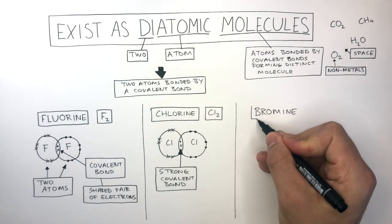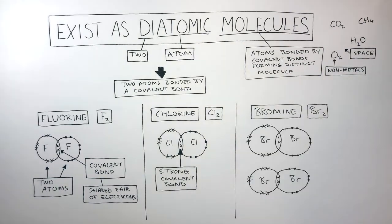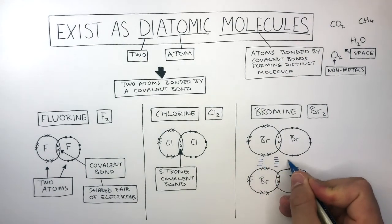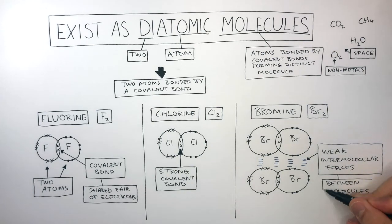Bromine is a diatomic molecule which has the molecular formula Br2. Here are two bromine molecules represented by dot and cross diagrams showing the outer electrons only. These lines represent the weak intermolecular forces which exist between the molecules and they require little energy to break.